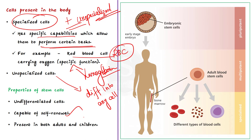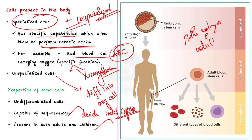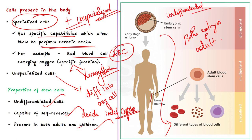Self-renewal means the ability to divide and make an indefinite number of copies of themselves. So, stem cells can be used to produce any other cell type in our body at times of need. Note that stem cells exist in both embryos and adult cells. To sum up the properties of stem cells: first, they are undifferentiated cells which can turn themselves into differentiated cells; secondly, they are capable of self-renewal; and thirdly, they are present in both adults and children.